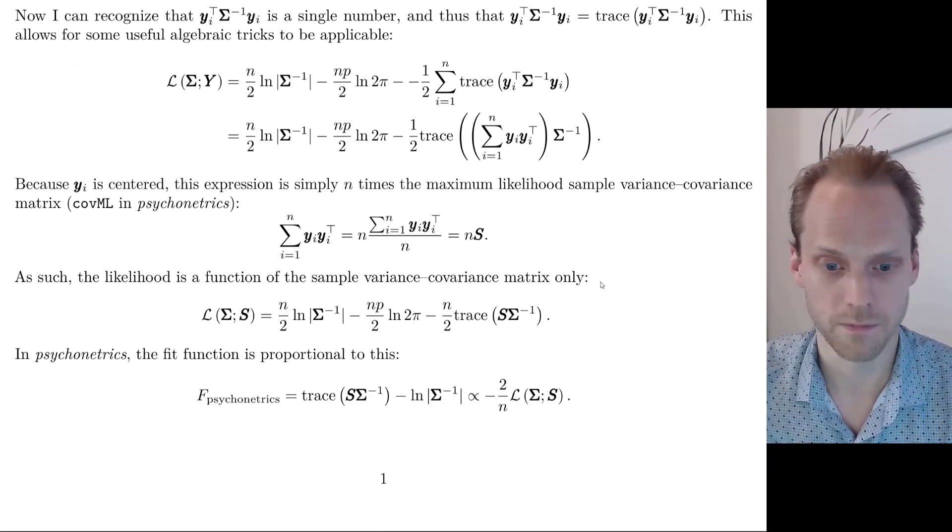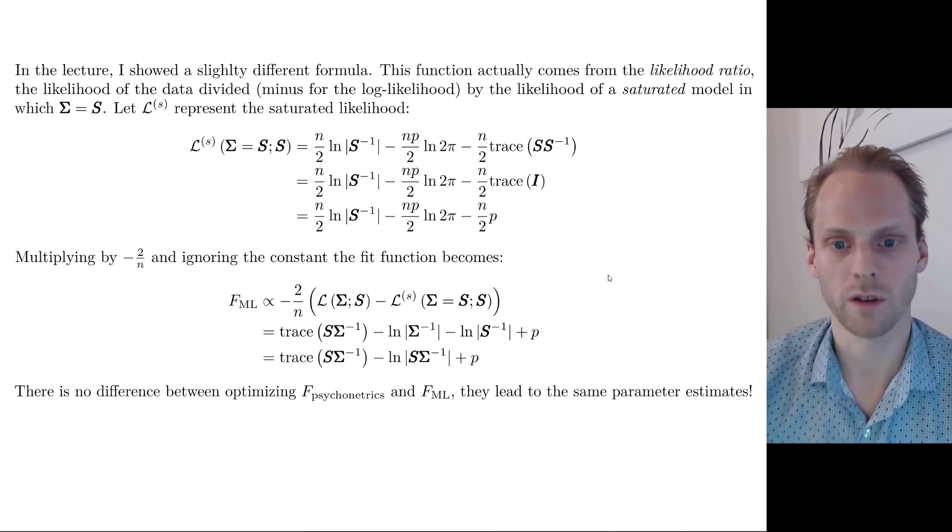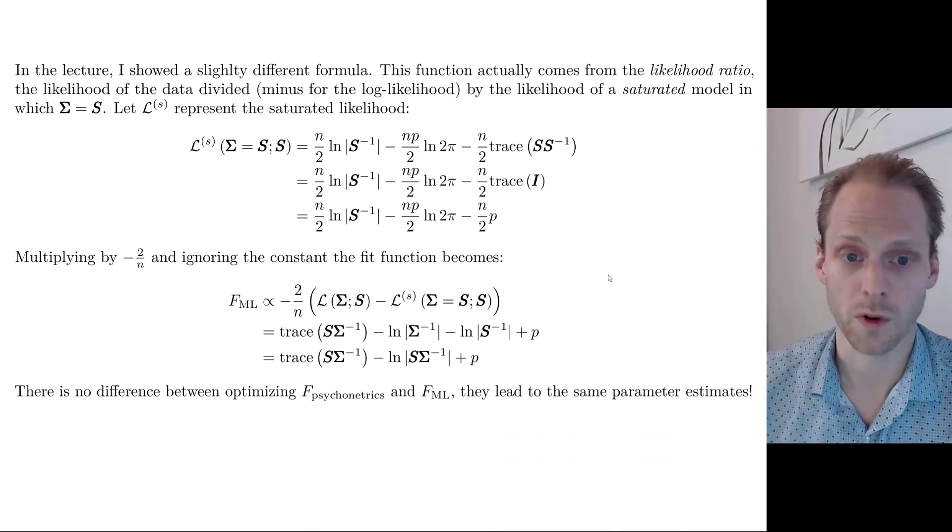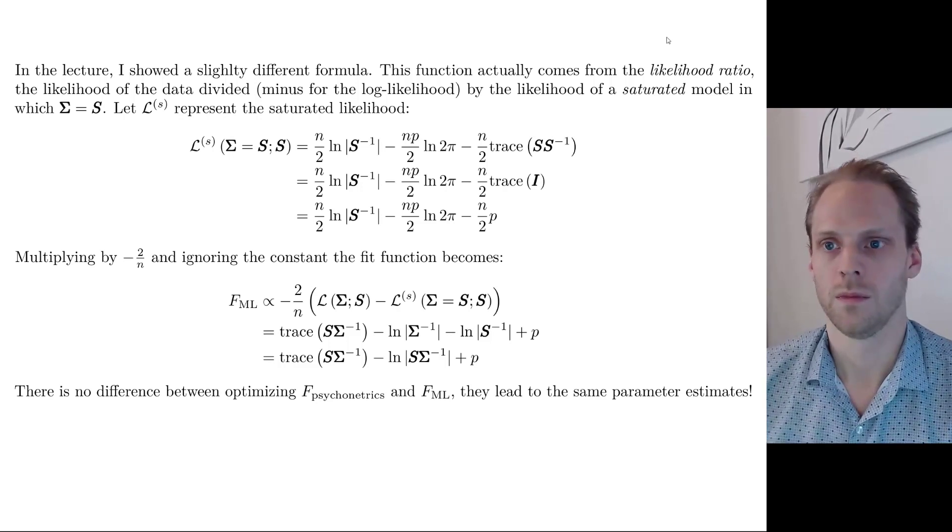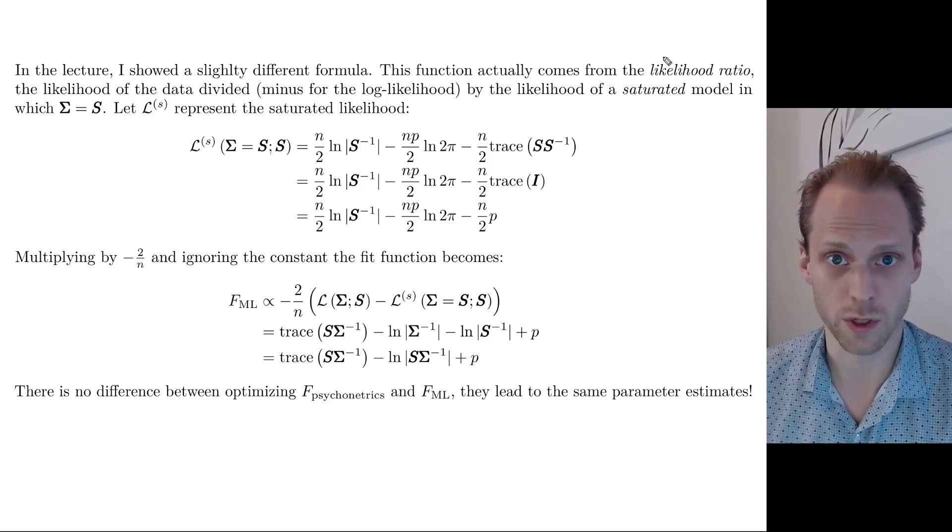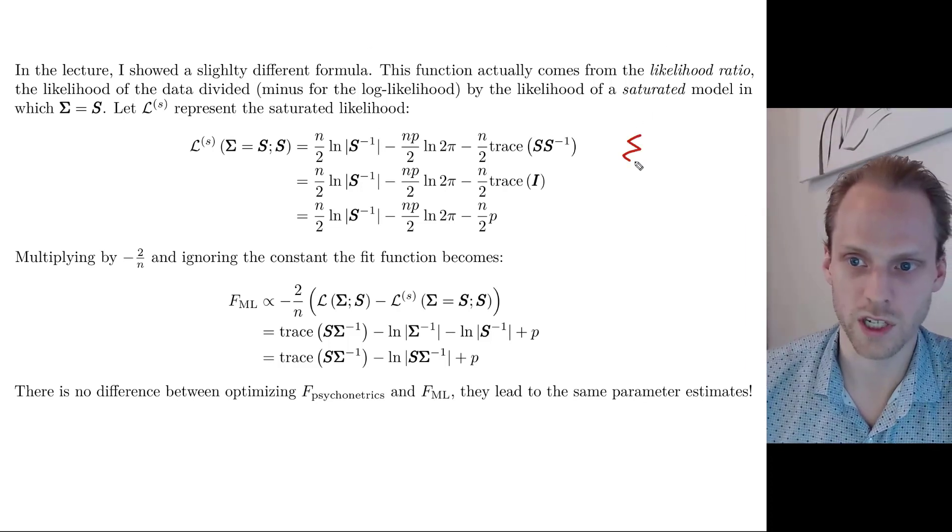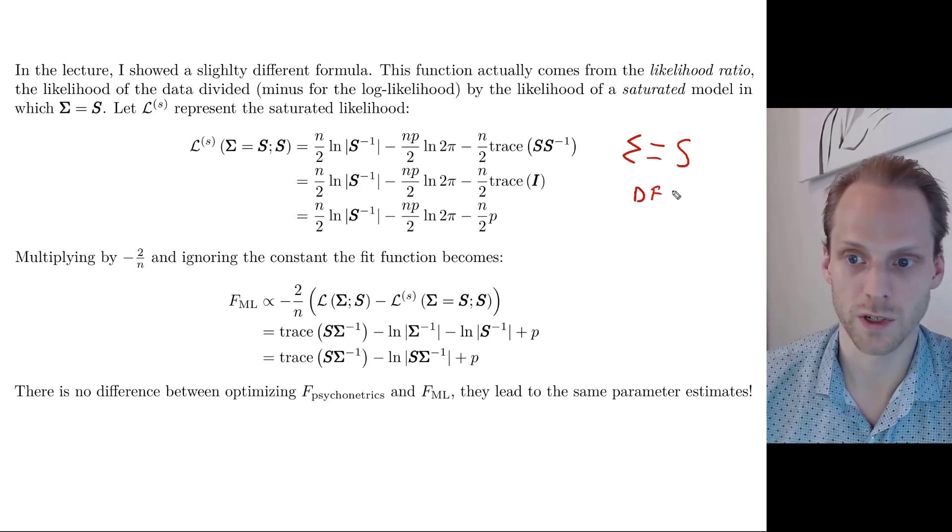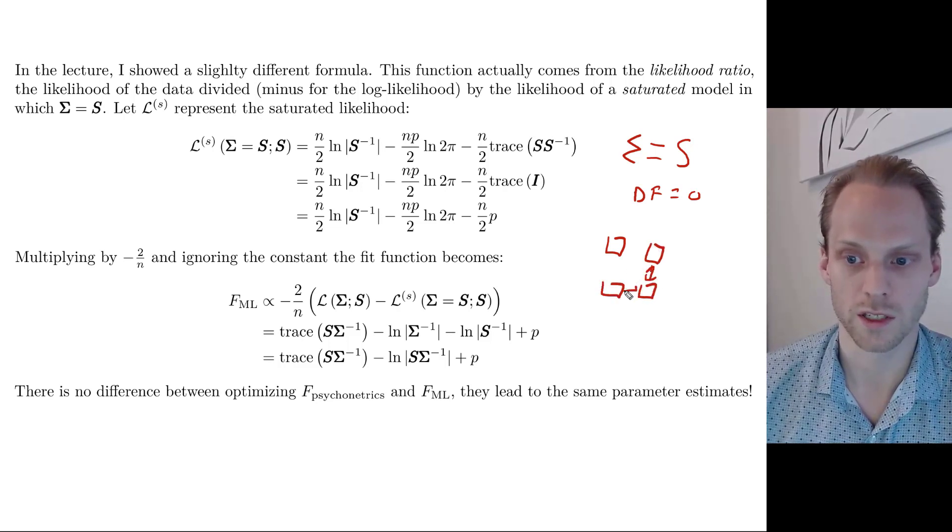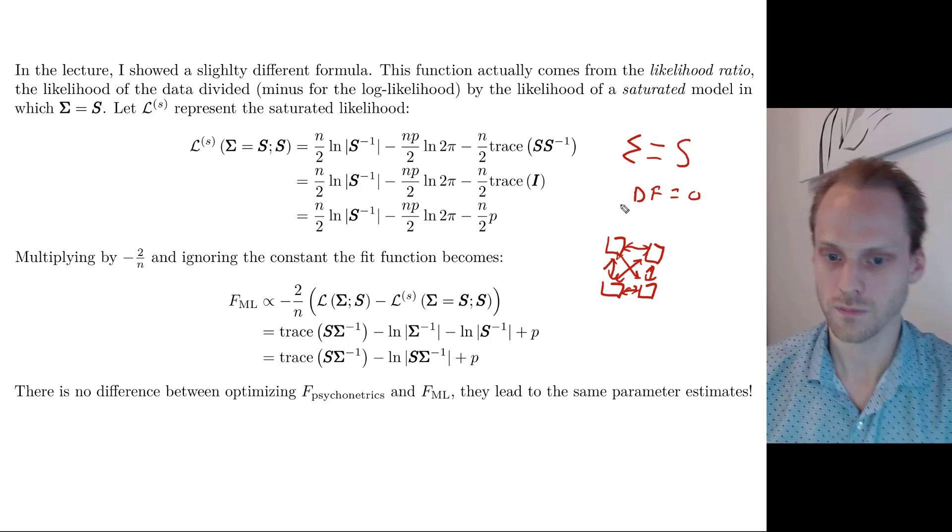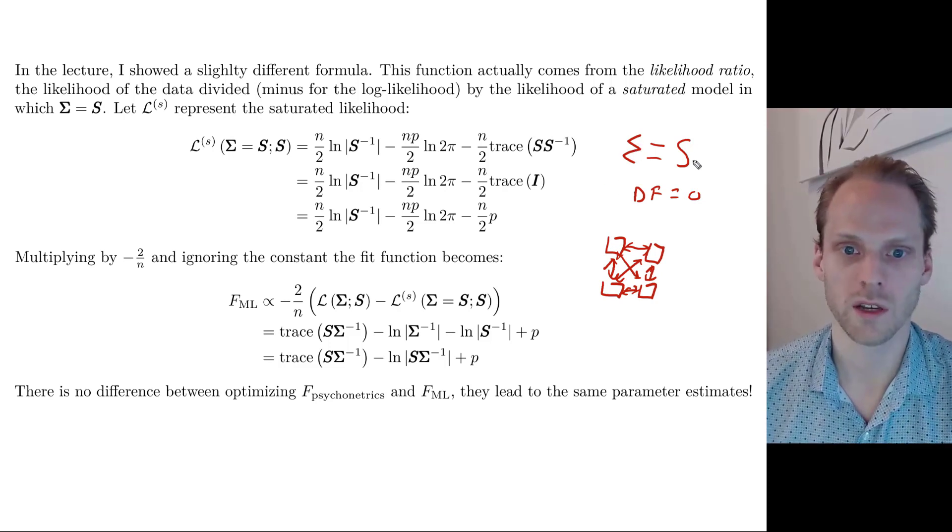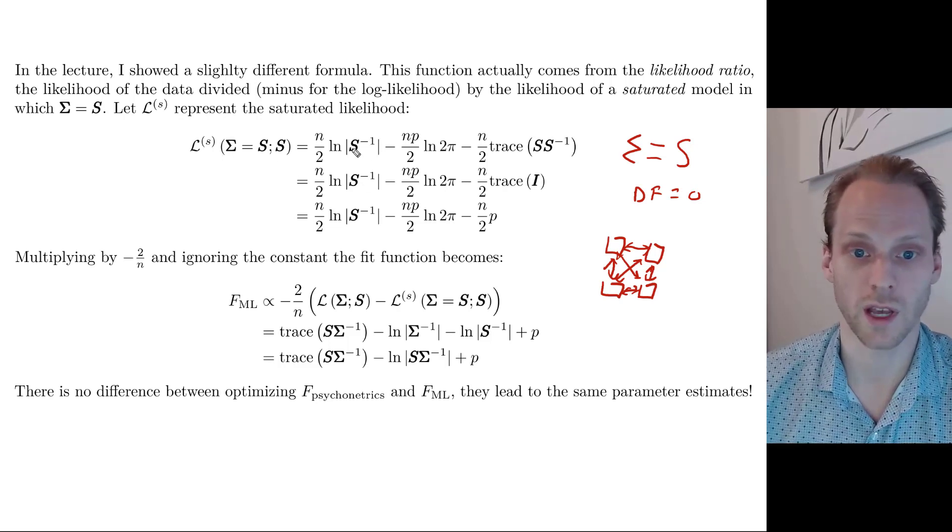Now, that is not what we showed in the lecture. In the lecture, I showed you a slightly different expression. So I quickly want to show where that comes from. And that comes from the likelihood ratio. So what we do there is we don't compute the likelihood itself. But we compute the likelihood relative to the likelihood of a saturated model. And a saturated model is a model in which sigma is perfect. So sigma equals s. It has degrees of freedom of 0. And we can think of it as a model where everything is correlated with each other. So we have correlations everywhere. So then we would have always a perfect fitting model. So sigma equals s.